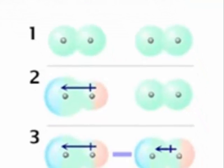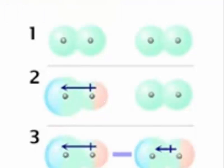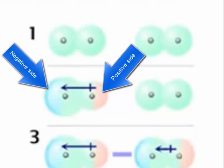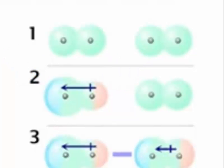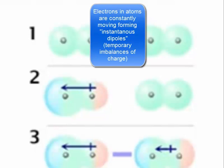In this third example, you can see London dispersion forces, which is the weakest kind of intermolecular force. This happens between two non-polar molecules. When these two non-polar molecules get close to each other, for just an instant, one molecule forms a positive side — the electrons, the negative particles, move to one side — which makes the other side positive for just an instant. That makes a negative side on the other molecule, because it forces this difference in charges to occur. This is called an instantaneous dipole, and it forms when there's no other attraction occurring between molecules.